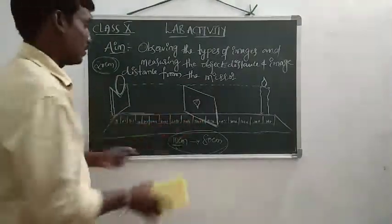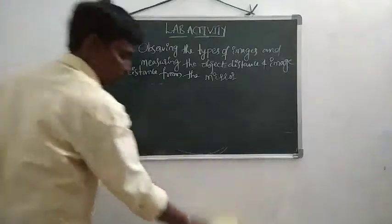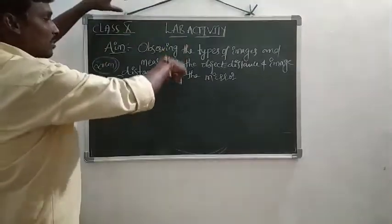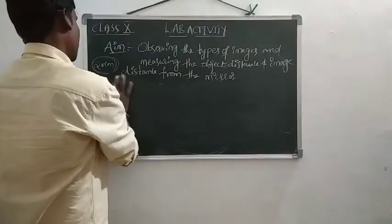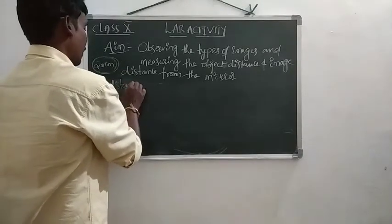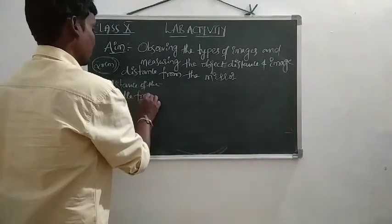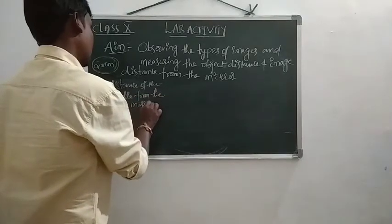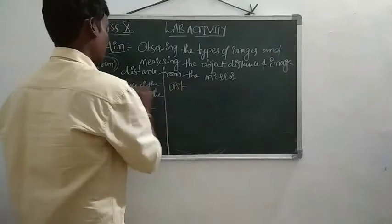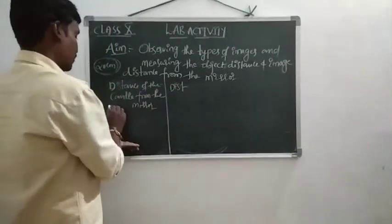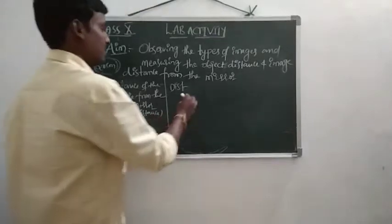We need to draw and maintain a table for the observations. The first column is the distance of the candle from the mirror, which is the object distance.